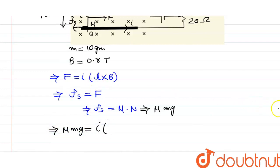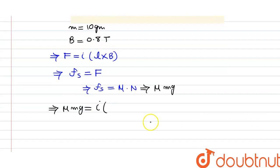So it will be μmg = I times what is the length of the wire? It is given in the question. It is 4.9 cm. So you will write it as 4.9 × 10^-2 multiplied by what is the strength of magnetic field? It is 0.8 tesla.